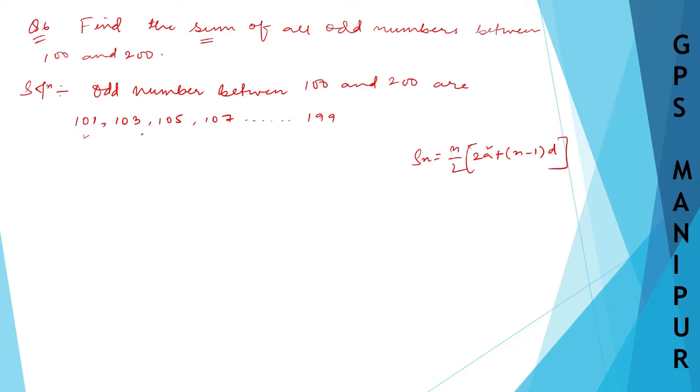Here we know A, the first term. We may know D because second term minus first term is D. But we do not know the value of n. If we want to find the sum, we need to find the value of n. So first let us find the value of n. How can we find the value of n?